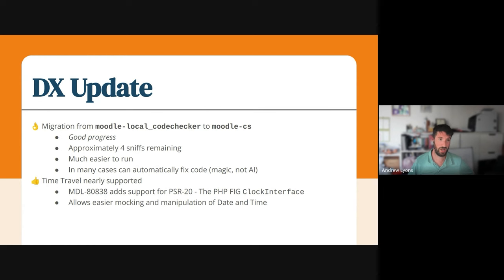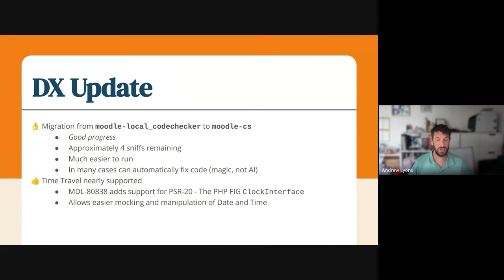We are also nearly supporting time travel, and that's via MDL 80838. This is not an April Fool's joke — there is a PHP FIG interface called the clock interface, PSR20, which allows us to mock and manipulate date and time. The idea is that by using that in real code, we can mock and manipulate those in unit tests, so instead of having tests which wait 10 seconds, we can say 'make this change and move the time forward or back 10 seconds.' This allows us to capture and detect a whole range of new bugs that we were not previously able to detect, which will lead to much more stable code.